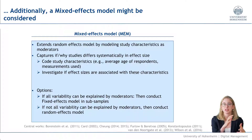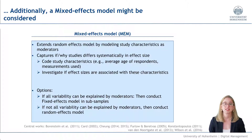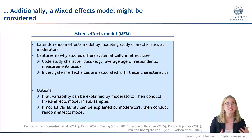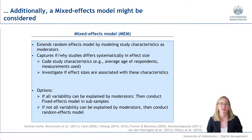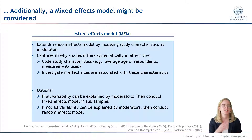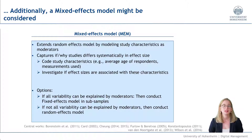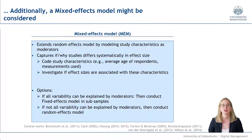We can model study characteristics as moderators, partition our studies into subgroups, and conduct a meta-analysis in each subgroup. In each subgroup, we can decide whether to conduct a fixed effects model or a random effects model. We may use a fixed effects model when effect sizes in a subgroup are very similar, and a random effects model when variability is uncertain.